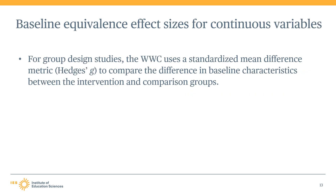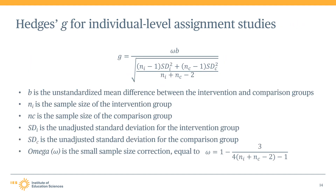For continuous variables, the WWC calculates Hedges G to determine baseline equivalence. Hedges G is a common effect size indicator. It is calculated as the difference between the average of the characteristic for intervention group members and the average of the characteristic for comparison group members. The difference is then standardized to put it on a standard deviation scale. This slide shows a general equation the WWC uses to calculate a Hedges G effect size: the difference in group averages divided by the pooled standard deviation, where the pooled standard deviation is the weighted average of each group's standard deviation.